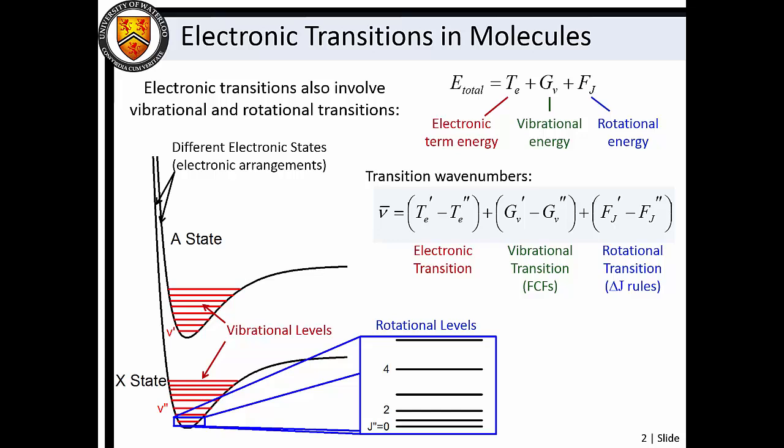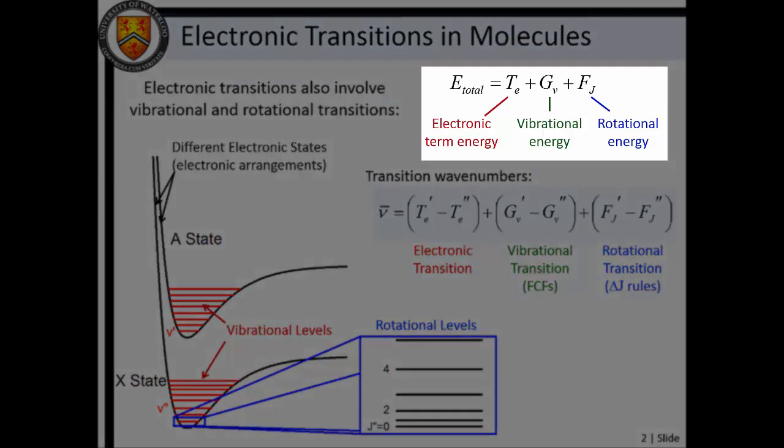This is accompanied by vibrational and rotational transitions. We can define the total energy of the system as the sum of the electronic, vibrational, and rotational energies.